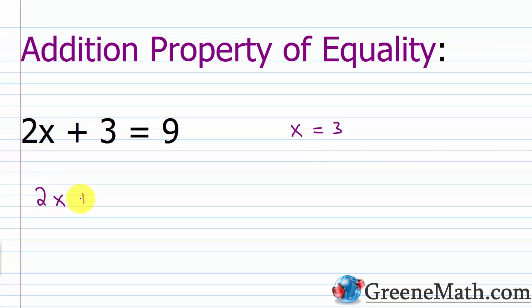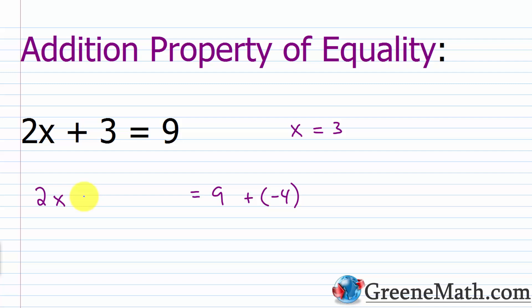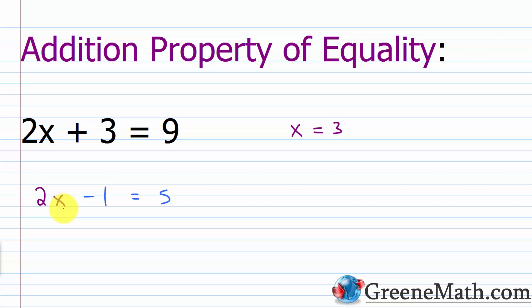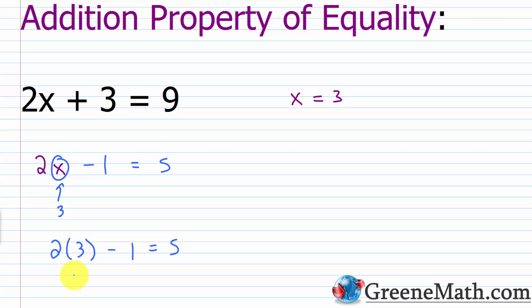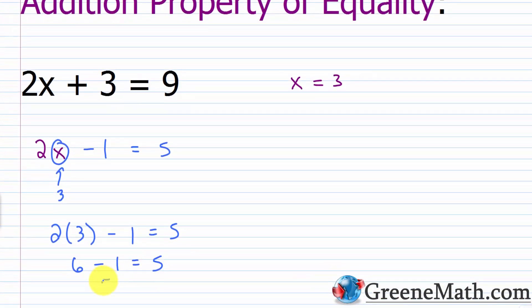Let's say I add negative 4 to both sides of the equation. So I have 2X plus 3 plus negative 4 on the left, and 9 plus negative 4 on the right. On the left, 3 plus negative 4 is negative 1, so I have 2X minus 1. On the right, 9 plus negative 4 is 5. Now if I plug 3 in for X, I get 2 times 3 minus 1 equals 5, which is 6 minus 1 equals 5, giving 5 equals 5. Adding the same value to each side did not affect the solution. X equals 3 before and after.